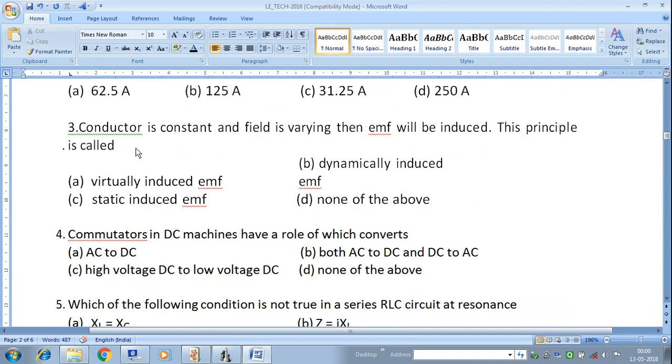Next question: Conductor is constant and field is varying, then EMF will be induced. This principle is called virtually induced EMF, static induced EMF, or dynamic induced EMF. When conductor is constant and magnetic field is changing or rotating, the EMF induced is called static induced EMF. Answer C is correct.